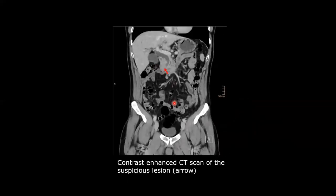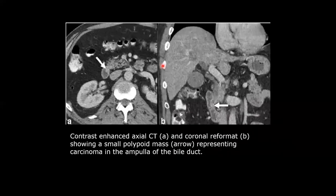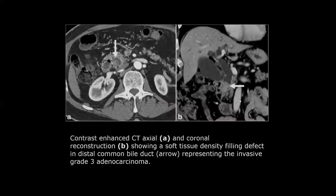This abdominal contrast-enhanced CT scan shows dilated common bile duct and MPD caused by an endoluminal duodenal mass. This contrast-enhanced CT scan shows a suspicious lesion at the distal end of the CBD, which turned out to be cholangiocarcinoma. Contrast-enhanced axial and coronal reconstructed CT images show a soft tissue density filling defect in the distal common bile duct representing invasive grade 3 adenocarcinoma.